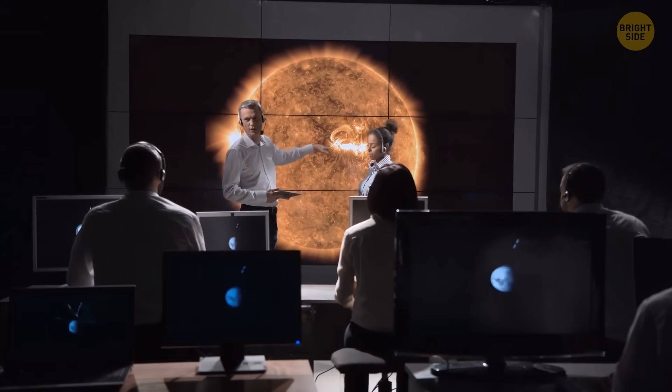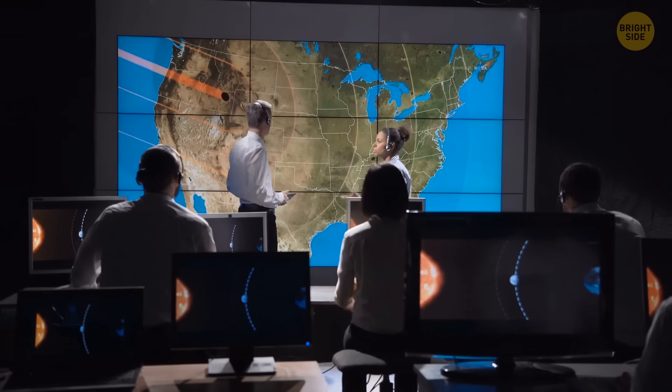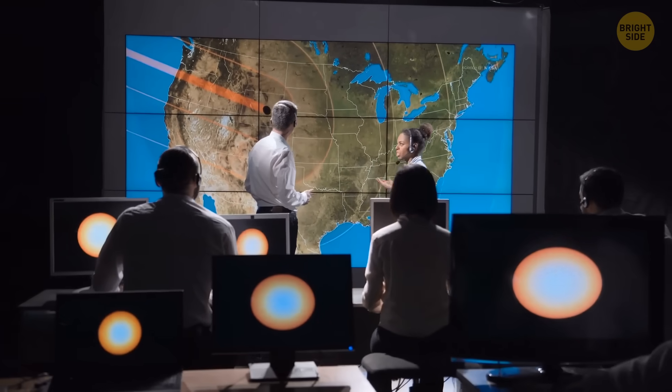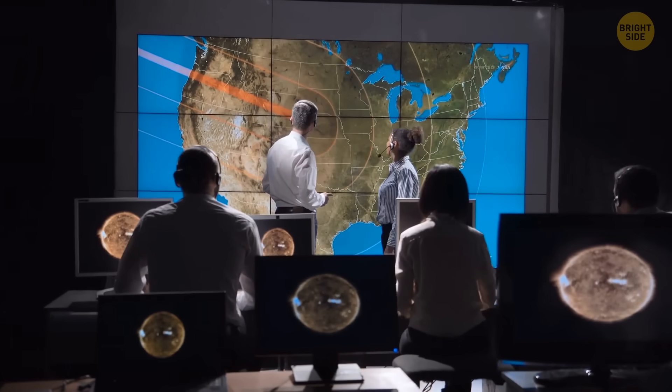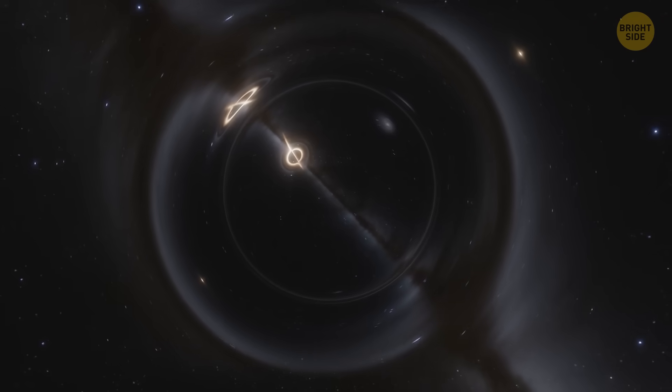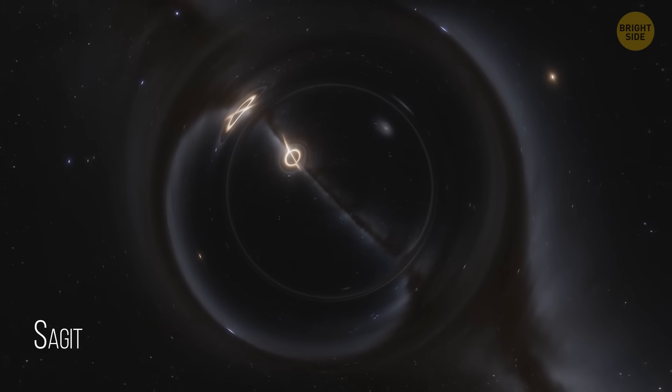Not so long ago, scientists found out that the supermassive black hole at the center of our home Milky Way galaxy seems to be leaking. Why is it a game-changer? Because it might mean that this black hole, called Sagittarius A asterisk, whose mass is 4.1 million times the mass of our sun,